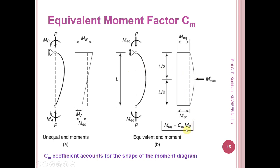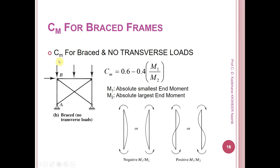CM for braced frames with no transverse loads: CM is taken as CM equals 0.6 minus 0.4 times (M1 divided by M2), where M1 is the absolute smallest end moment and M2 is the absolute largest end moment. For a double curvature S-shape, the ratio M1/M2 is taken as positive. For single curvature bending, the ratio M1/M2 is taken as negative.